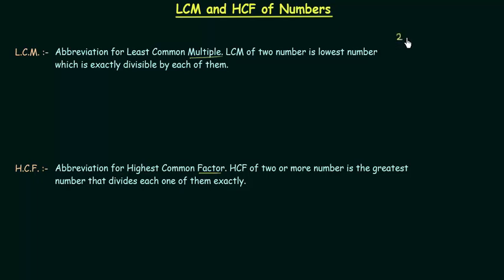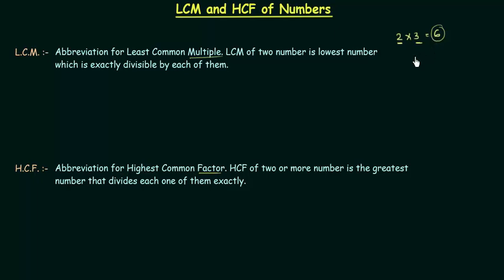If I multiply 2 and 3 this will give me 6. So 2 and 3 are factors of 6. And if I talk about 2, then 6 is a multiple of 2 because we are multiplying 3 and getting 6. In the same way for 3, 6 is a multiple because we are multiplying 2 and getting 6. So 2 and 3 are factors of 6 and 6 is a multiple of 2 and 3.